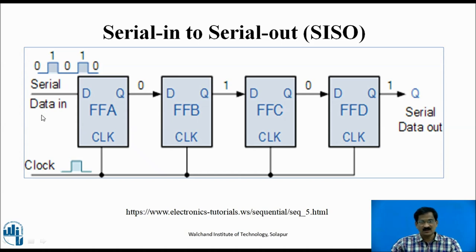Looking at flip-flop FFA, we load the data at the FFA input side, called Serial-Data-In. The clock pulse is given simultaneously to all flip-flops: FFA, FFB, FFC, and FFD. The output of each flip-flop is given as input to the next — QA acts as DB, QB is given to DC, and QC is given to DD as input. Data is retrieved at the FFD output QD, which is the Serial-Out.